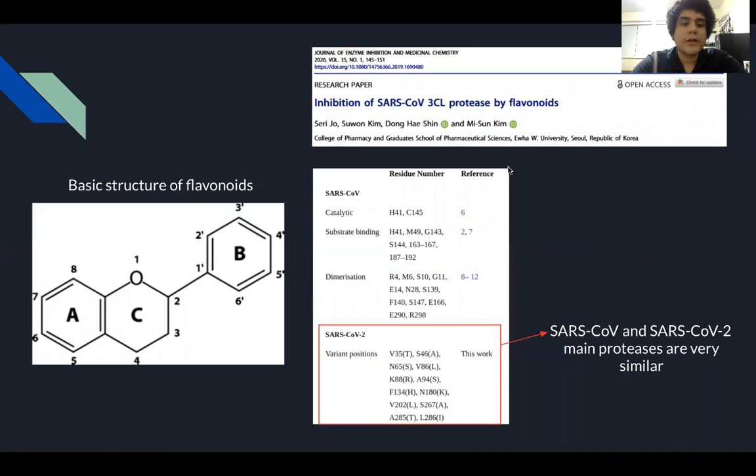So flavonoids are phytochemical compounds that have proven antiviral activity against different varieties of viruses, including coronaviruses. In fact, recently it was demonstrated that some flavonoids could inhibit the main protease of SARS-CoV. And as you may know, the differences between SARS-CoV-2 and SARS-CoV main proteases are just 12 amino acids. This fact supports the idea that maybe flavonoids could be used as therapeutic agents in the current pandemic.